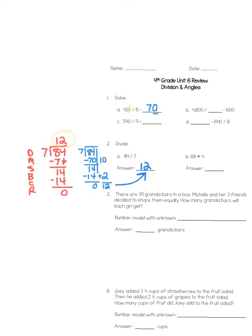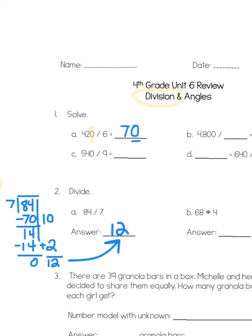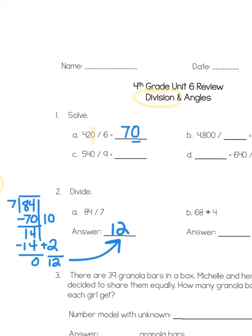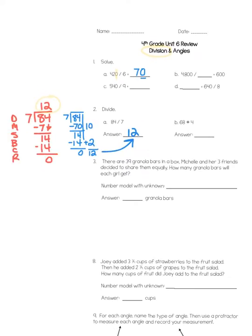Now, problem number 3 is a story problem, which requires us to think about what we're being asked to do. Well, spoiler alert. Since most of the problems we've been doing have been involving division, it's probably a division problem. So, let's look at it. There are 39 granola bars in a box. Michelle and her 3 friends decided to share them equally. How many granola bars will each girl get? Now, if we use the ruckus strategy, read multiple times, underline the question, circle important parts, come up with an action plan, and solve, that asks us to go back and read this again. And that's going to be important here in just a second. There are 39 granola bars in a box. Michelle and her 3 friends, I'm going to highlight and set a circle here, decided to share them equally. How many granola bars will each girl get?